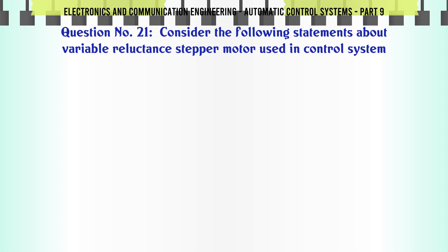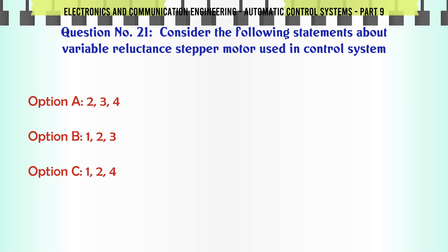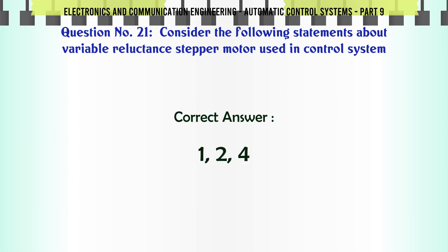Consider the following statements about variable reluctance stepper motor used in control systems. Options: A. 2, 3, 4; B. 1, 2, 3; C. 1, 2, 4; D. 1, 3, 4. The correct answer is: 1, 2, 4.